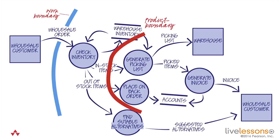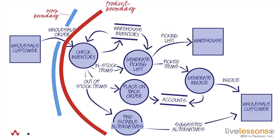Or I might put the product boundary over here, and now I've got a bigger, more elaborate automated system that takes in more of the work. Alternatively, I might put it right out here — now I've automated everything, taken all the manual processes out of it, and ended up with a completely automated system. So you're playing with this, determining which is the optimal system to build.